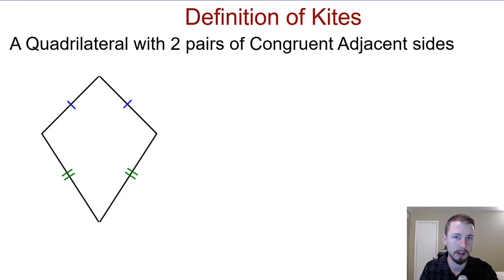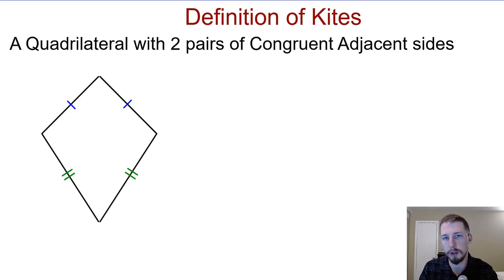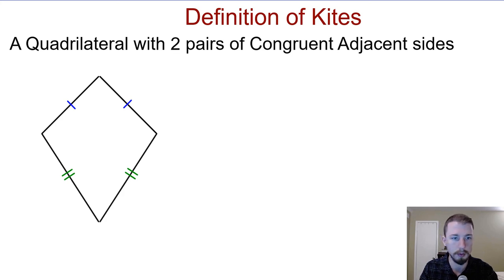Hey guys, welcome back. This will be our last installment. We're going to learn about kites — the last special quadrilateral we're going to deal with — and we'll kind of summarize all of our family tree with the quadrilaterals as well. So it should be nice, short and sweet. We'll get right into it. Kites are actually really simple, so it should be fine.